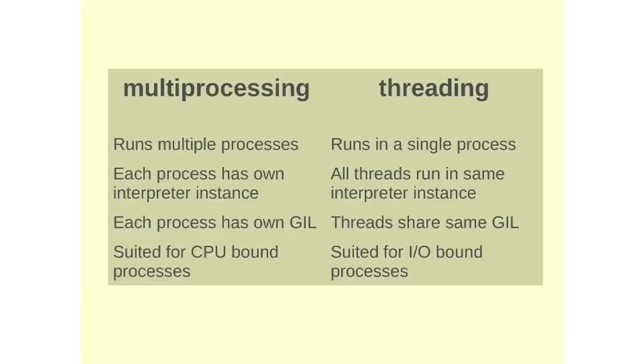As I said before, each process has a GIL in multiprocessing, but threading, all the threads share the same GIL. Therefore, they keep having this contention of who will get the GIL, who will be able to execute next. Multiprocessing is more suited for CPU bound processing and threading is for I/O bound, because the GIL releases the lock on I/O.